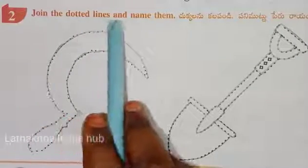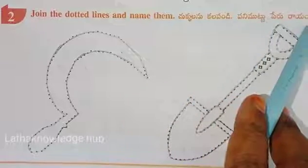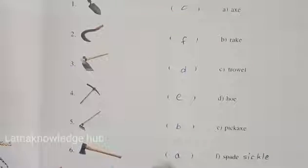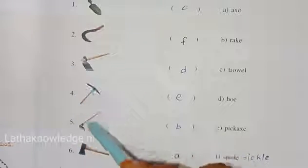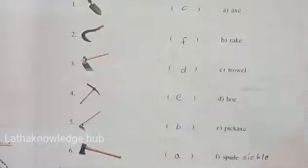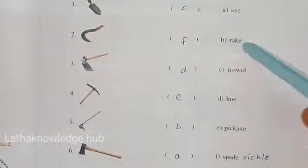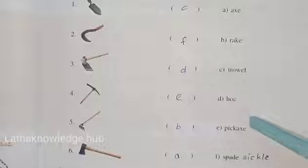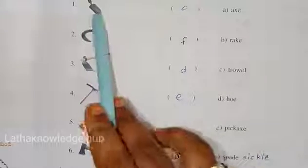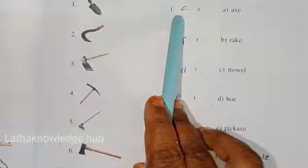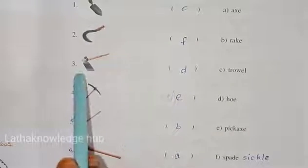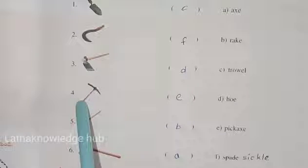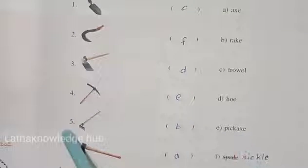Join the dotted lines and name them. Match the agriculture equipment: the equipment shown includes axe, rake, trowel, hoe, pickets, and sickle. First one is trowel, second one is sickle, third one is hoe, fourth one is pickets, fifth one is rake, and sixth one is axe.